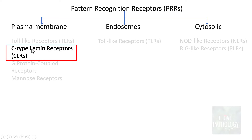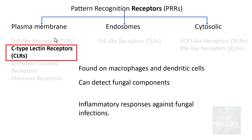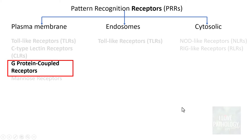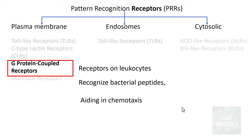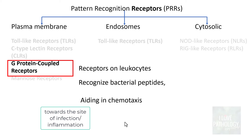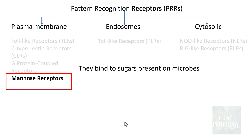C-type lectin receptors, or CLRs, are found on macrophages and dendritic cells. They detect fungal components and are involved in inflammatory responses against fungal infections. G-protein coupled receptors are found in all types of leukocytes, recognize bacterial peptides, and help in chemotaxis — the movement of inflammatory cells toward the site of infection. Mannose receptors bind to sugars present on microbes, attach to them, and cause phagocytosis and destruction.